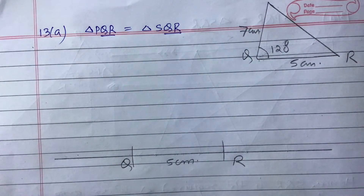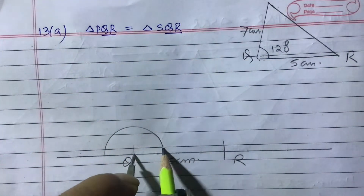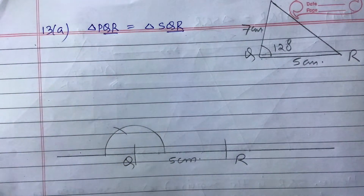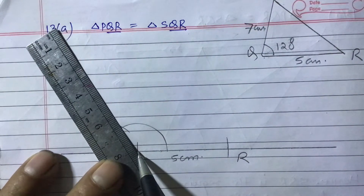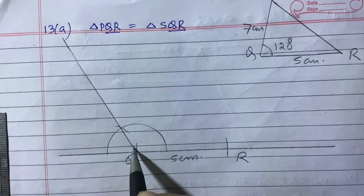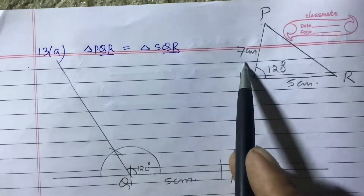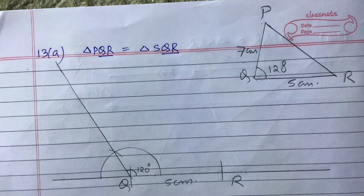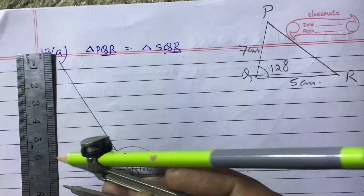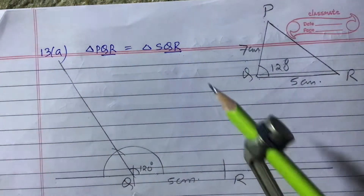Now we will construct 120 degrees at Q using a compass. If you draw it this way, the smaller angle will be 60 degrees and the bigger angle will be 120 degrees — obtuse and acute. So 120 degrees is constructed at Q. Now from Q to P it is 7 centimeters, so measure 7 centimeters with the compass and mark that length.